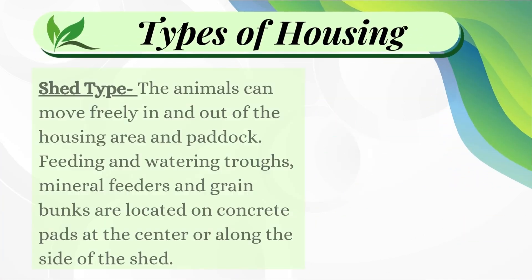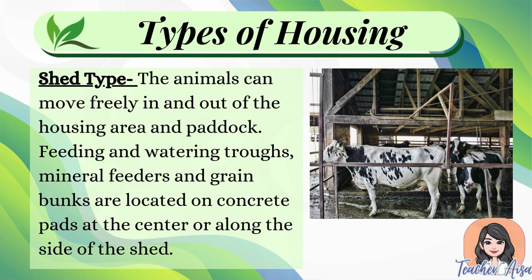There are different types of housing. First, shed type: the animals can move freely in and out of the housing area and paddock. Feeding and watering troughs, mineral feeders, and grain bunks are located on concrete pads at the center or along the side of the shed.